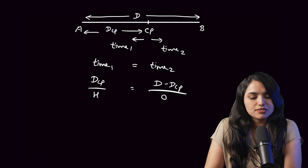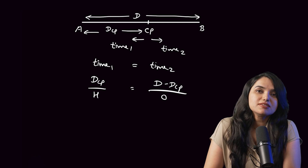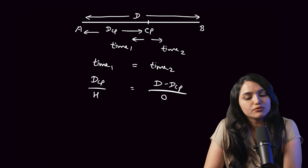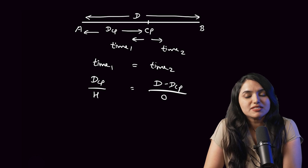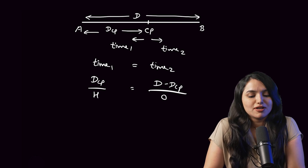To find the distance to CP, there is a formula to calculate the distance from place of departure to CP. Looking at the diagram: place A and place B, capital D is the total distance between A and B, and DCP is the distance between A and CP. By definition of CP, the time to go from CP to A equals the time to go from CP to B — that is, time 1 equals time 2.